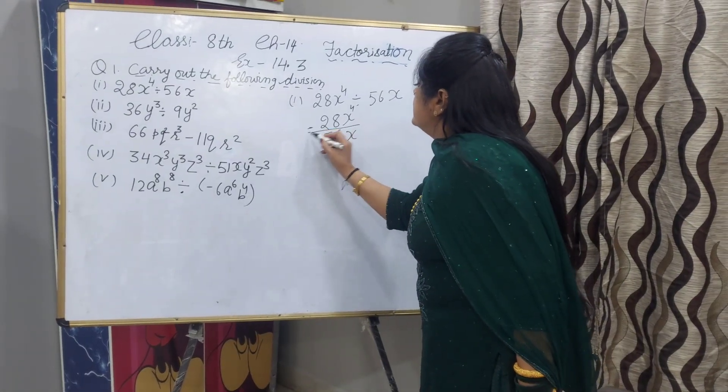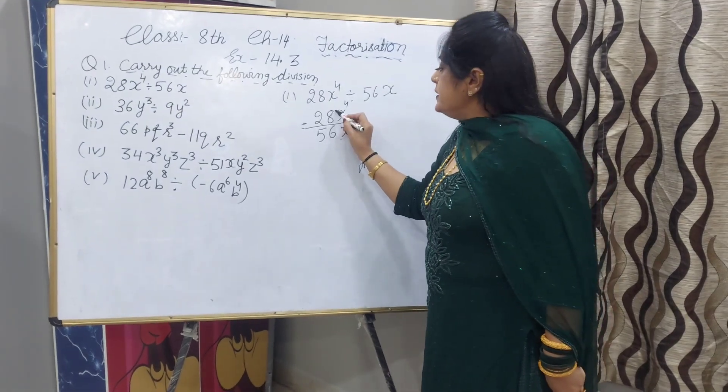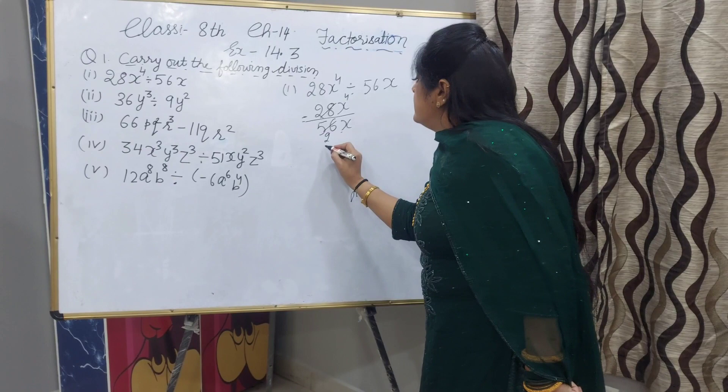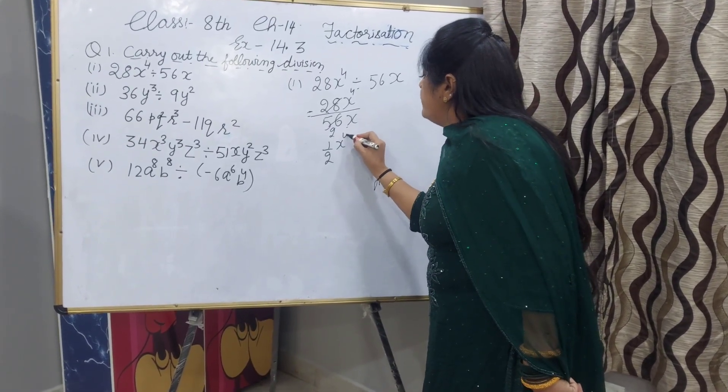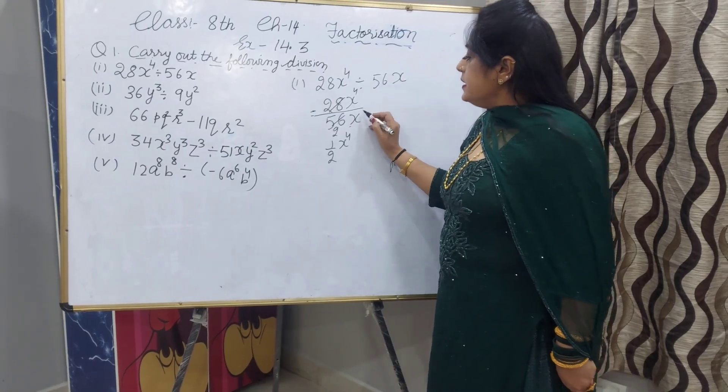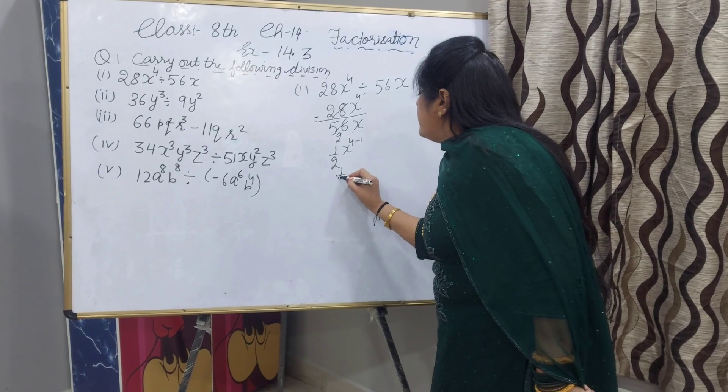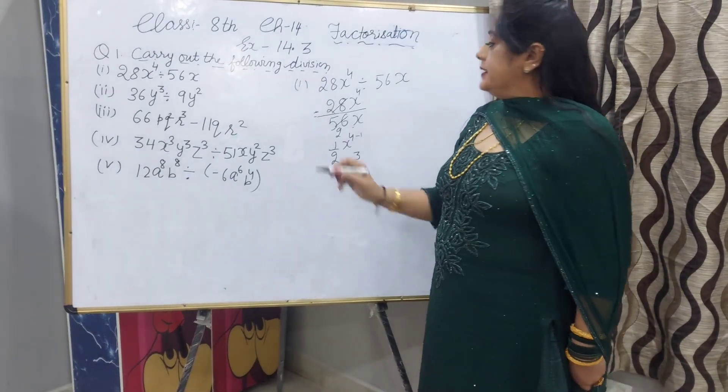First we can cancel 28 and 56, 28 into 56 means 1 by 2. This base is same, x power 4. If power is nothing, it means 1 minus 1. So 1 by 2, x raised to power 3.